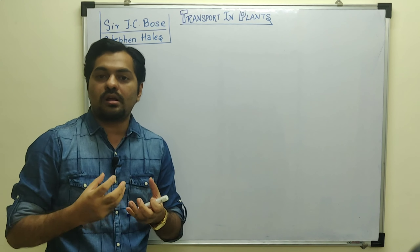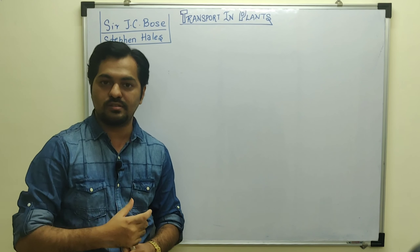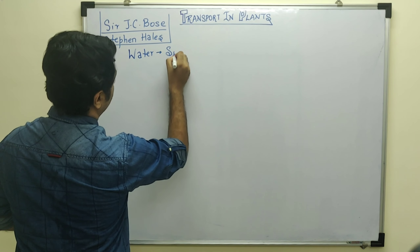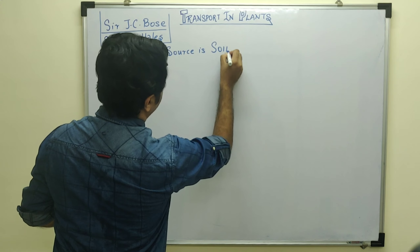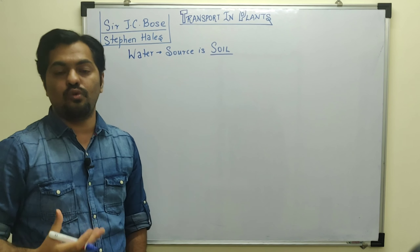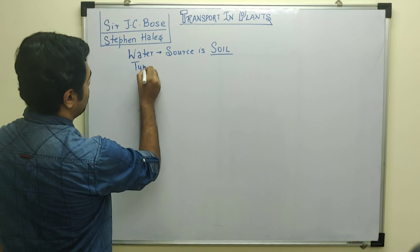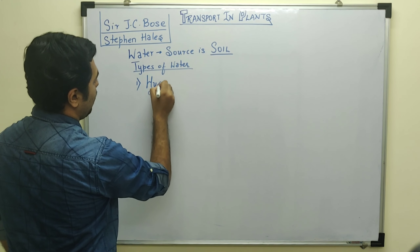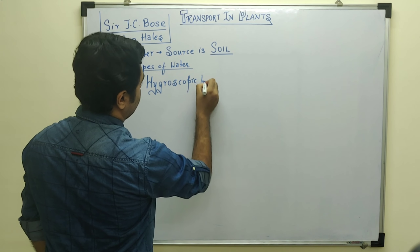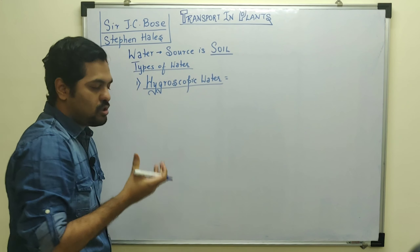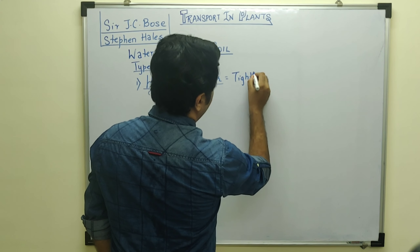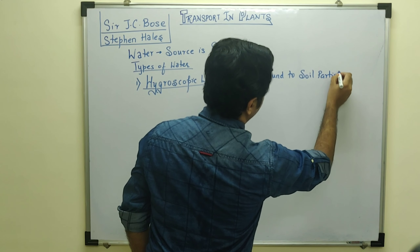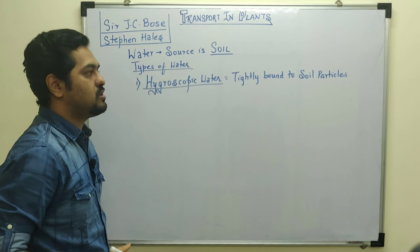Plants need water as well as food, and transportation is required after food is synthesized. The source of water for plants is the soil. Now soil may have different types of water present. The first type of water is known as hygroscopic water. Hygroscopic water refers to water that is tightly bound to soil particles.